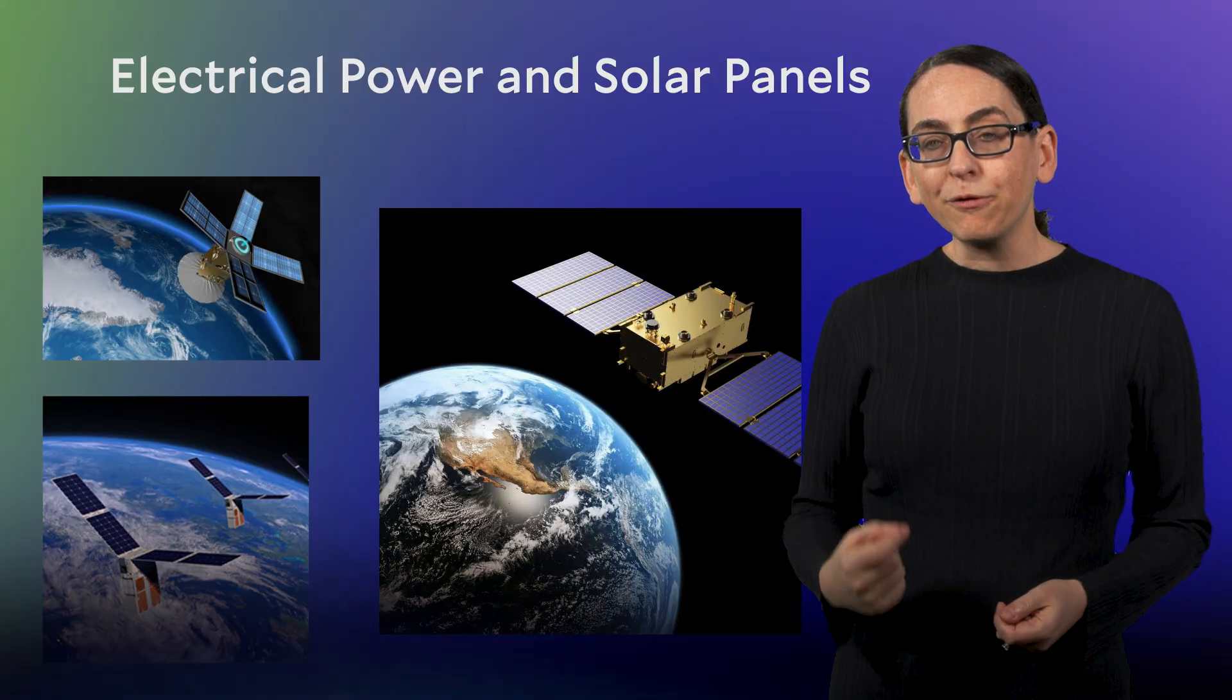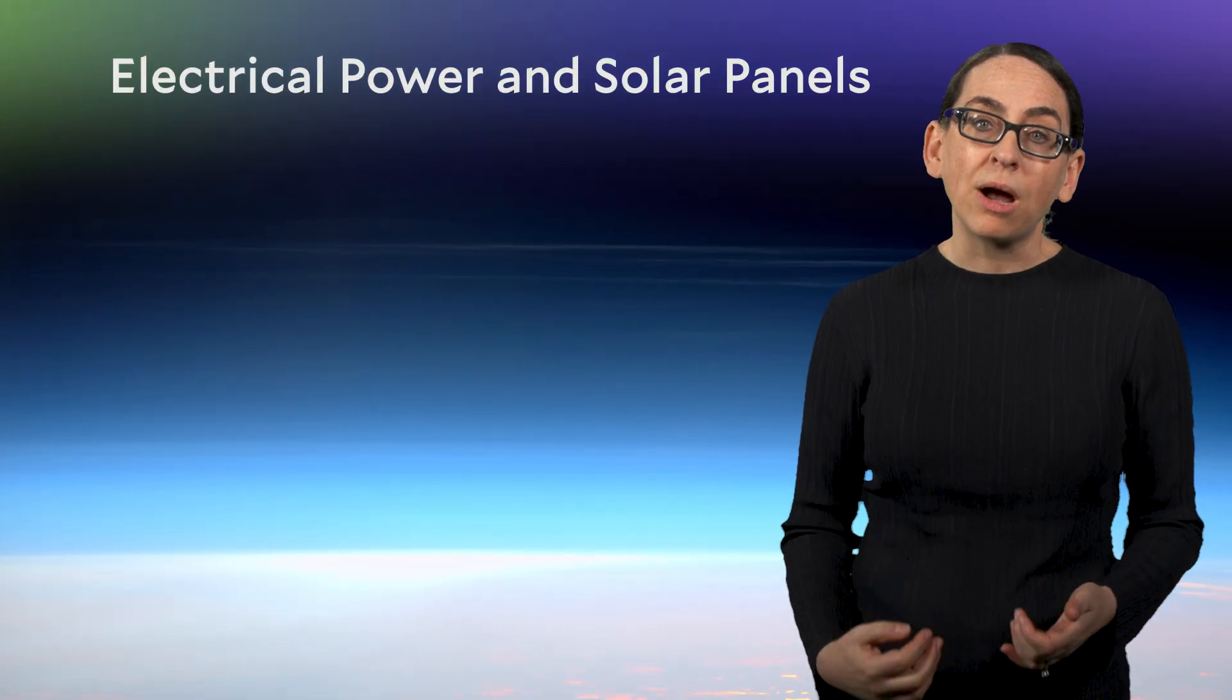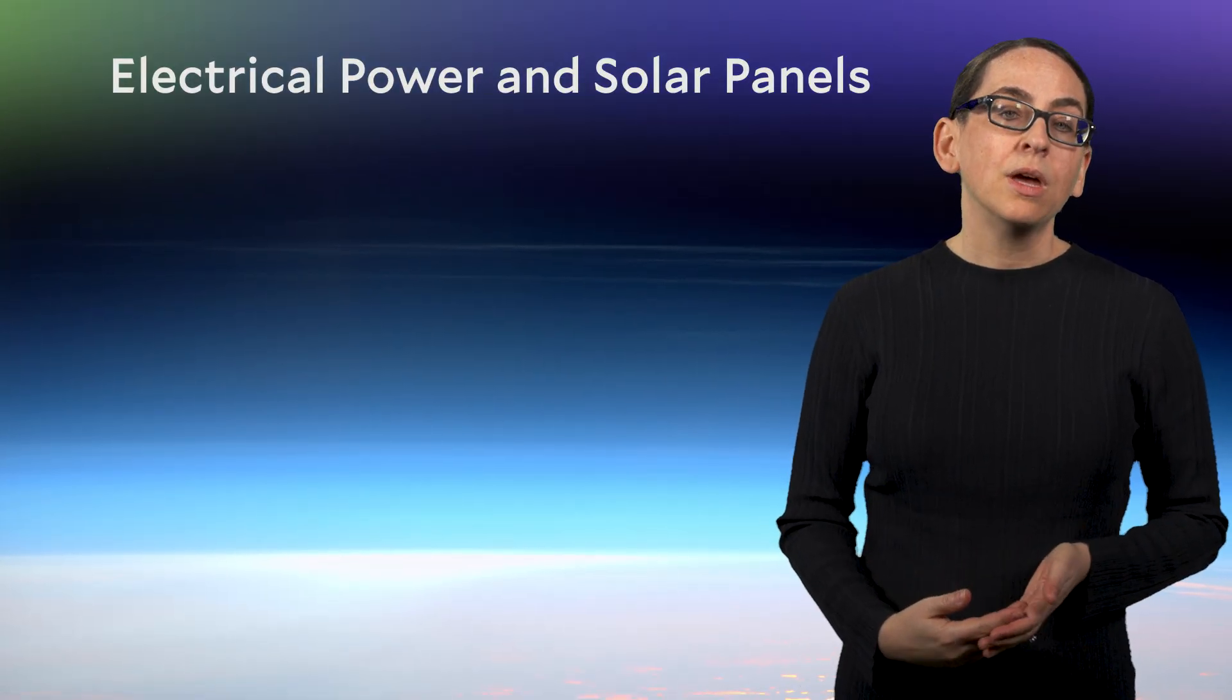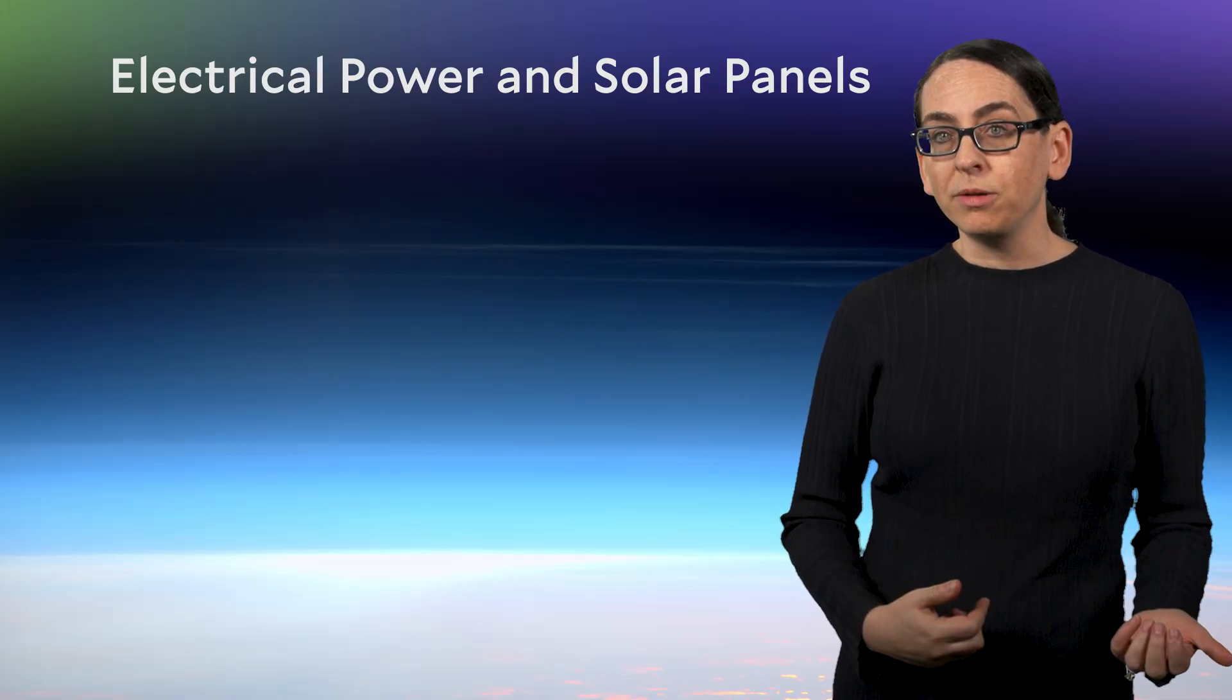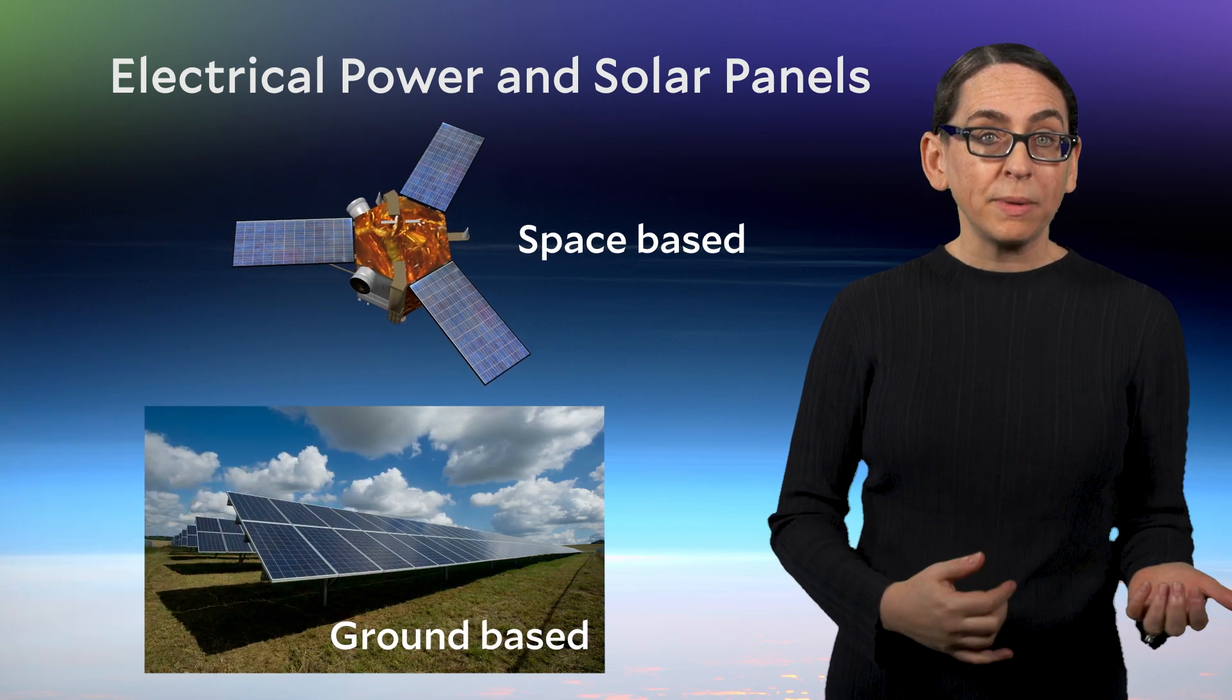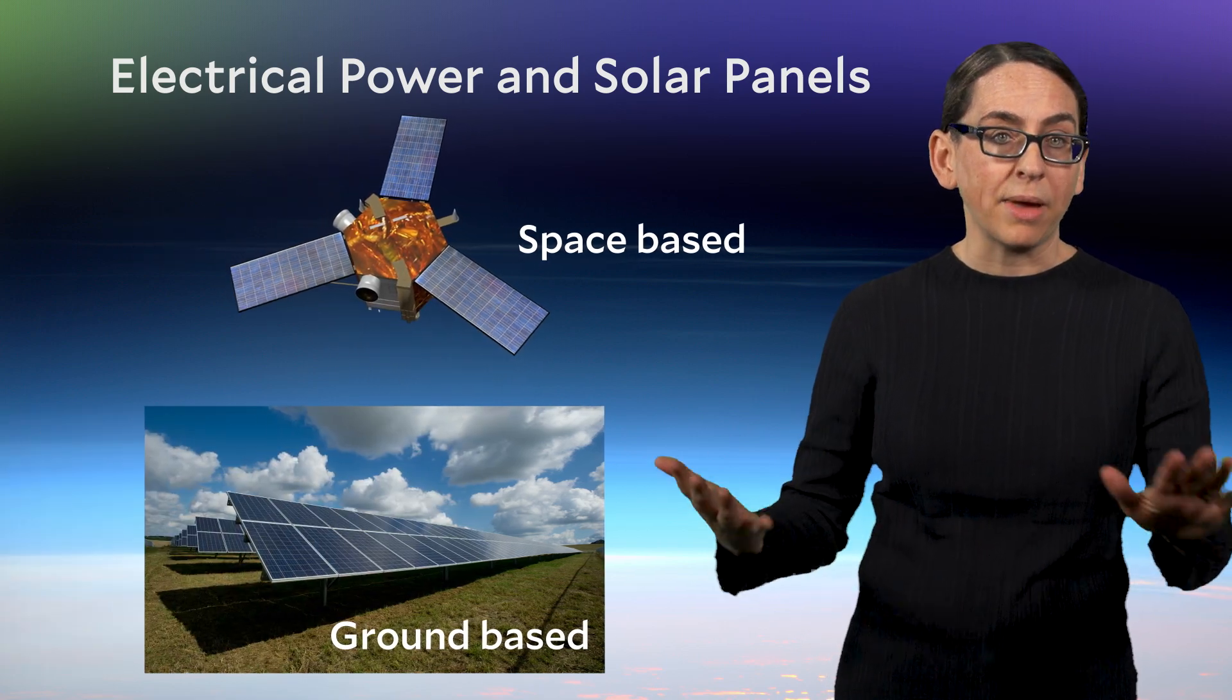What's most different between operating solar panels on Earth versus in space is the amount of available sunlight. So even on a super sunny day, Earth's atmosphere blocks a lot of solar radiation. In space there's more available sunlight, and so a space-based solar panel can generate nearly ten times more power over the same area.